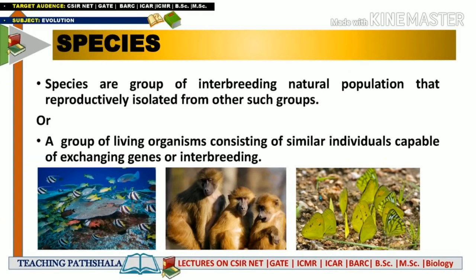We are going to start our discussion with species — what is a species. Species are the group of interbreeding natural populations that are reproductively isolated from other such groups. That means they are living together and capable of interbreeding with each other, but only with members of the same group, not with members of other groups.